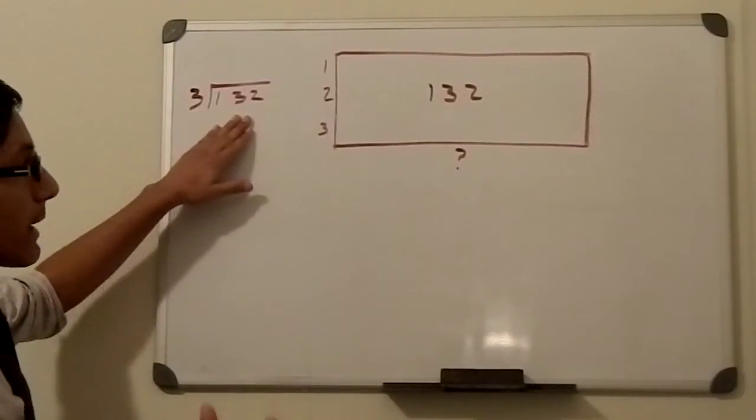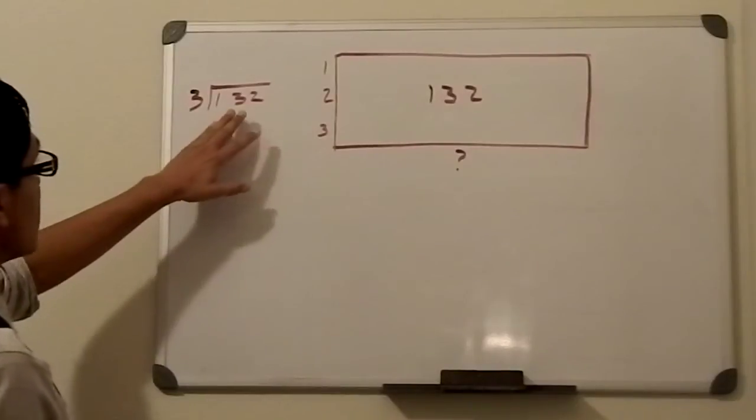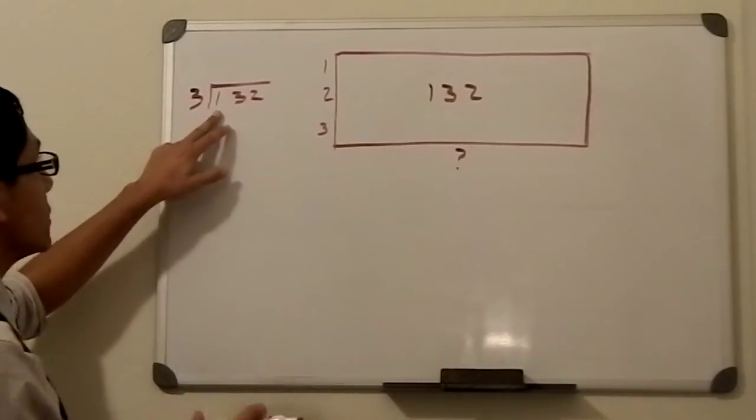One more thing I want to point out is when we start to derive this, we have to look at this very literally. So this number here, when we look at the 1, it isn't a 1, it's a 100, right? Because it's in the hundreds place.